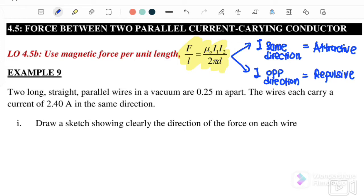We go to Example 9. Two long, straight, parallel wires in a vacuum are 0.25 meters apart. The wires each carry a current of 2.4 amperes in the same direction. An important thing is we must know the two currents are flowing in the same direction, so we know that these two wires experience an attractive force.